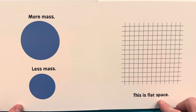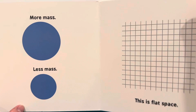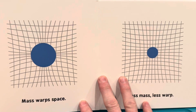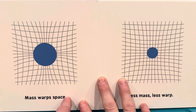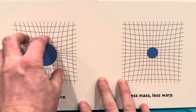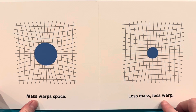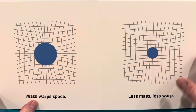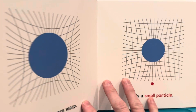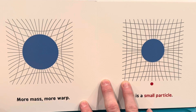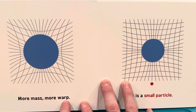This is a flat space. Mass warps space. Less mass, less warp. More mass, more warp.